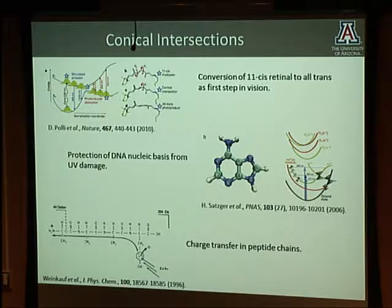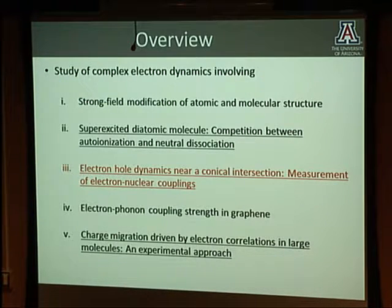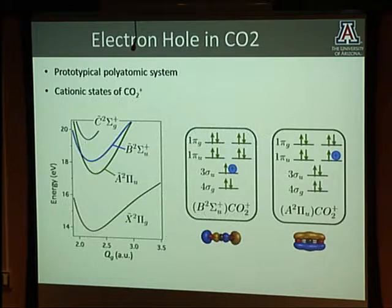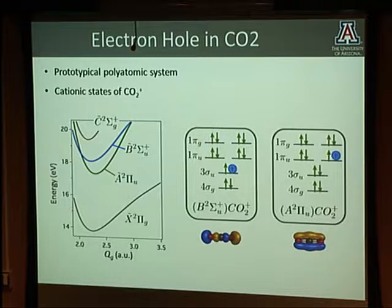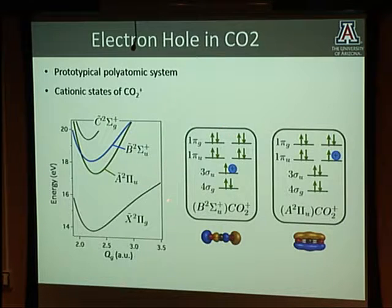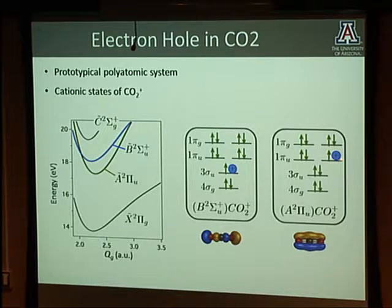In this next case, we can get quantitative information about electron-nuclear couplings. The system we chose is CO₂—simple for a chemist, but for a physicist it's pretty complex. Taking CO₂, it has many electrons and three cores. If you remove electrons from the outermost orbital you get CO₂⁺. Removing from π_u gives the A state, from σ_u gives the B state, and from σ_g gives the C state. The two states of interest are A and B because they intersect.